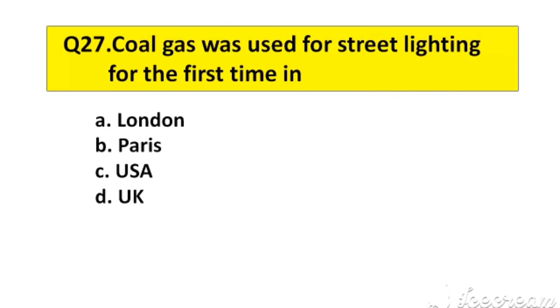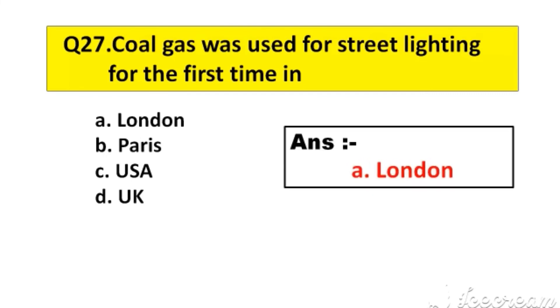Question number 27. Coal gas was used for street lighting for the first time in option A: London, B: Paris, C: USA, D: UK. The right answer is option A: London.